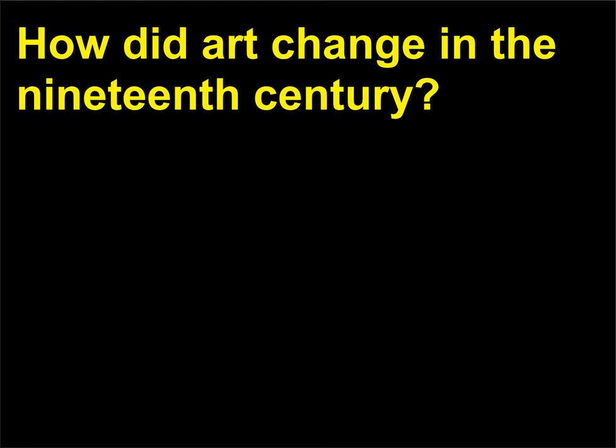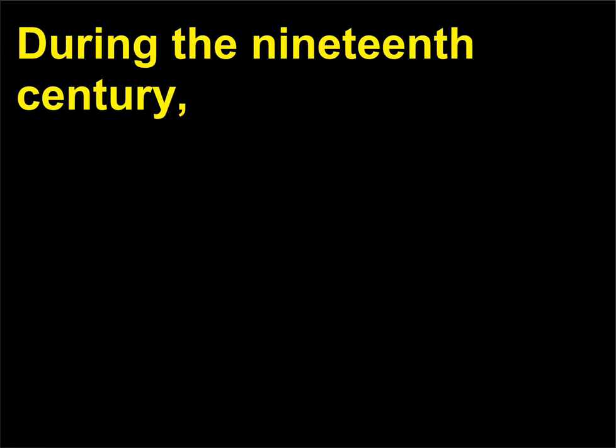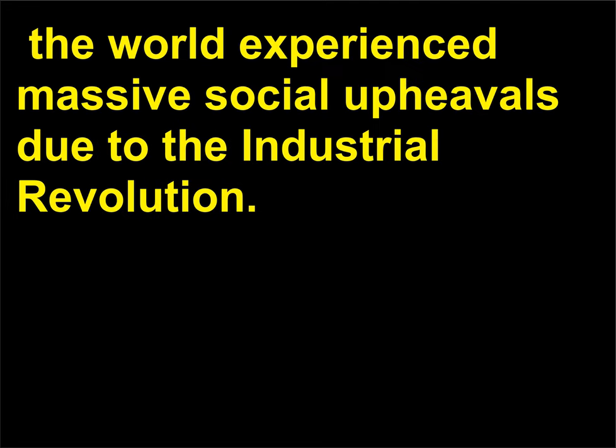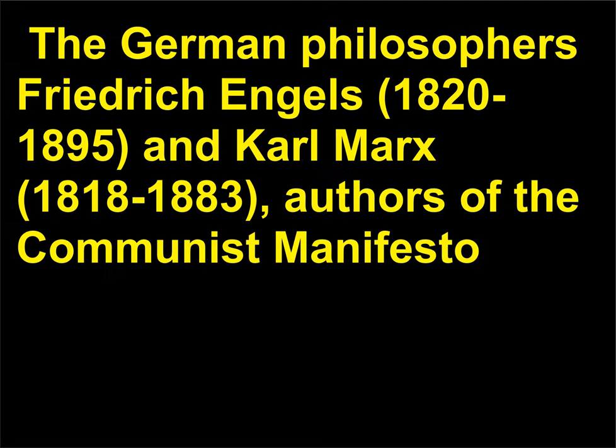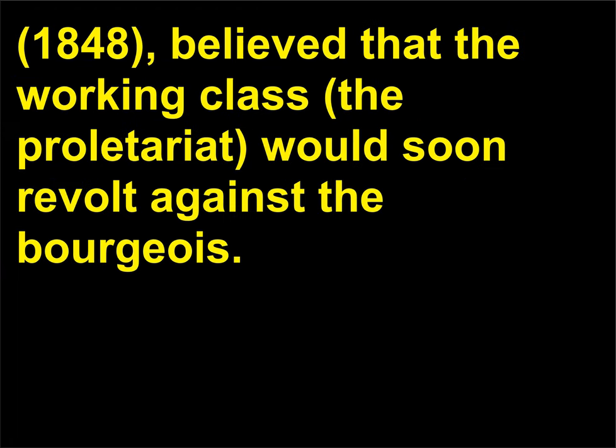How did art change in the 19th century? During the 19th century the world experienced massive social upheavals due to the industrial revolution. The German philosophers Friedrich Engels (1820–1895) and Karl Marx (1818–1883), authors of the Communist Manifesto (1848), believed that the working class — the proletariat — would soon revolt against the bourgeois.